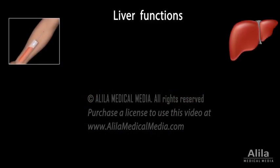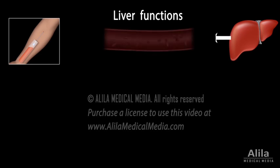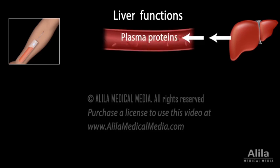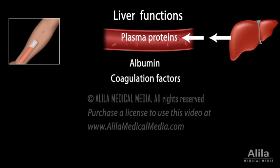Two major functions of the liver are evaluated: the liver's ability to produce blood plasma proteins, such as albumin and blood coagulation factors, and the liver's ability to process bilirubin, a blood waste product.